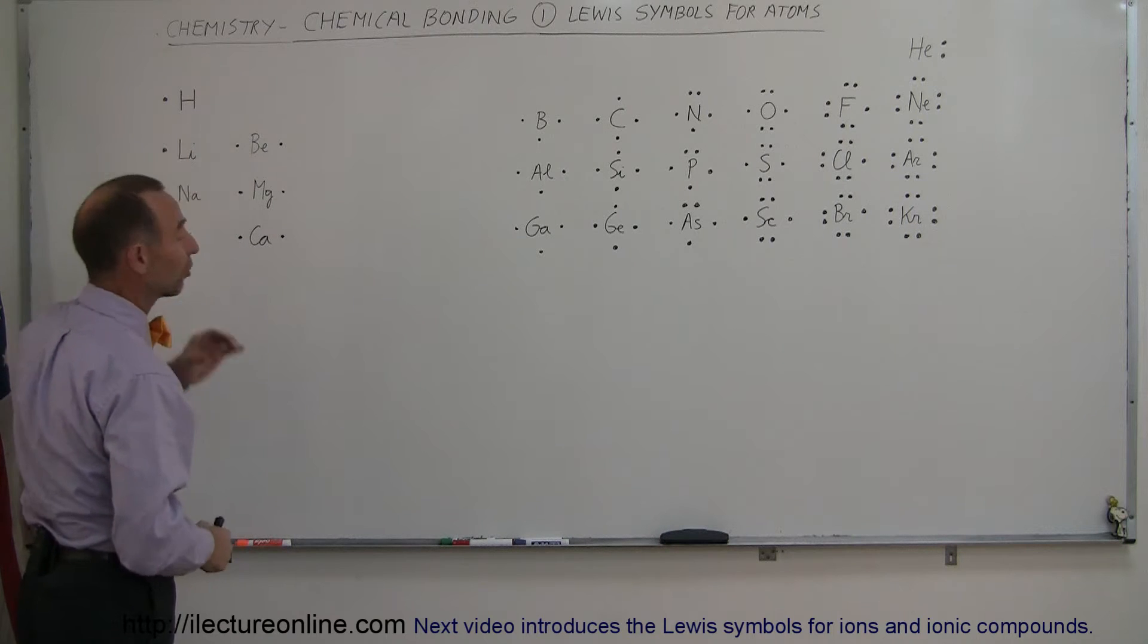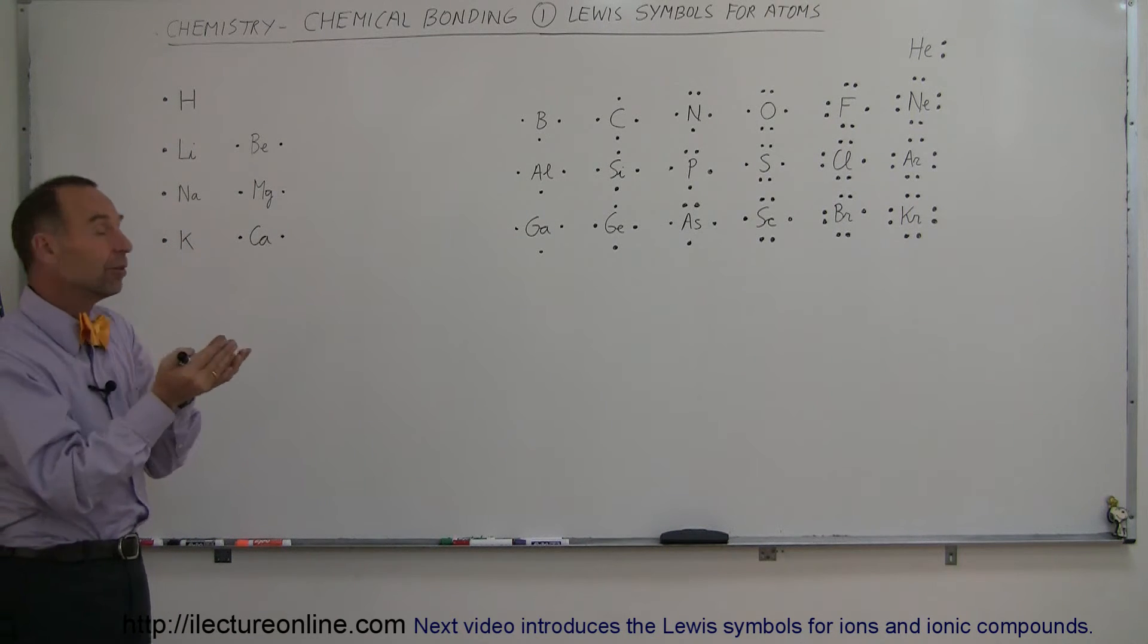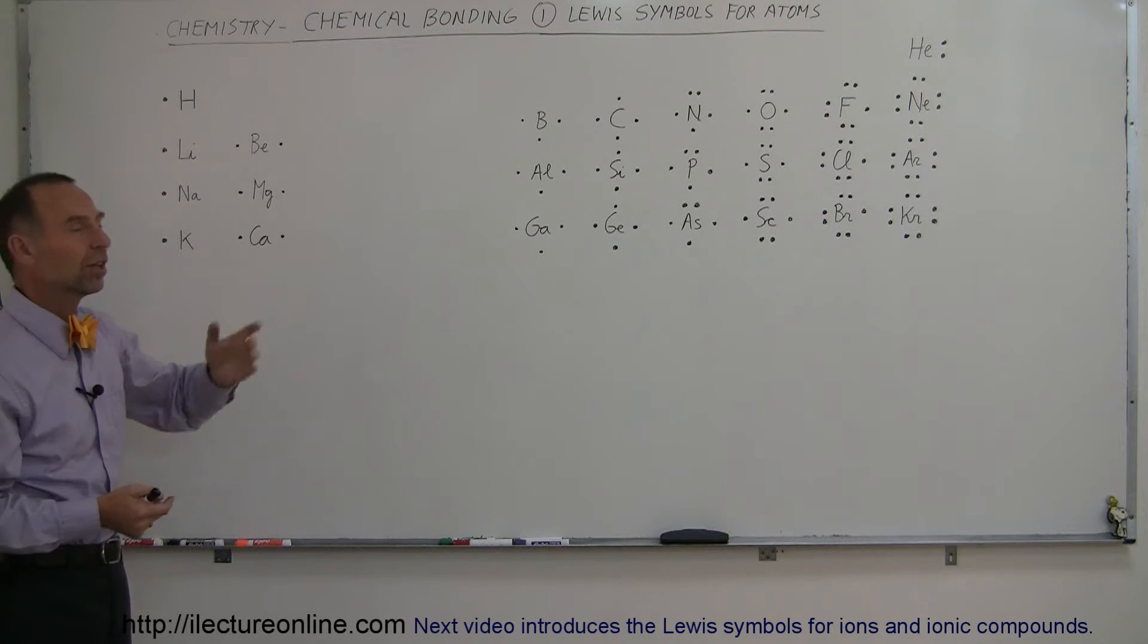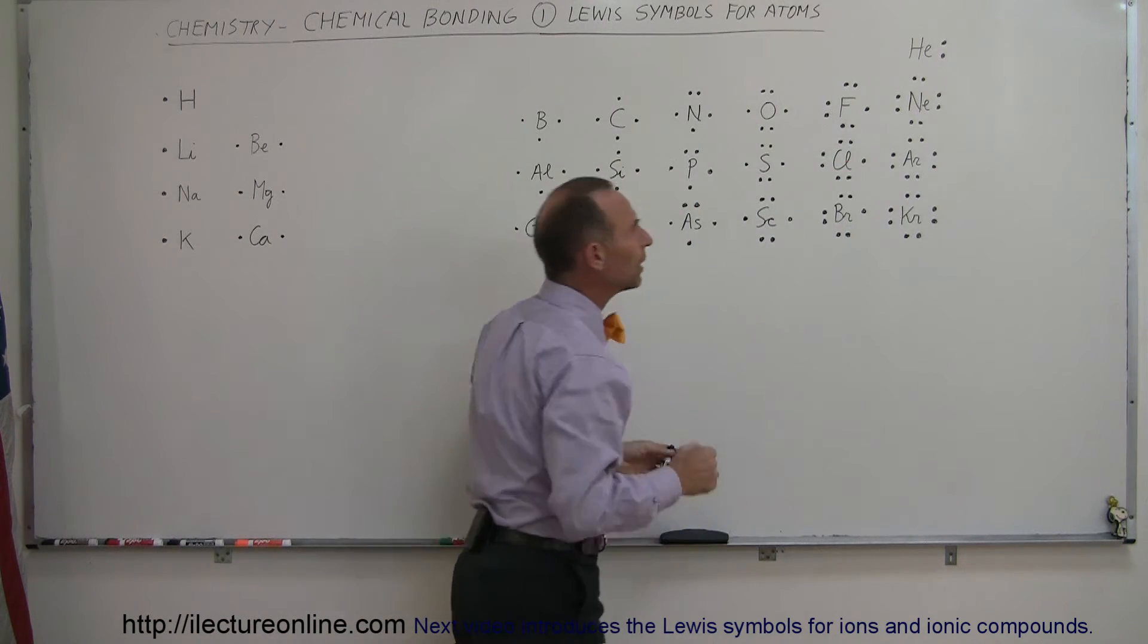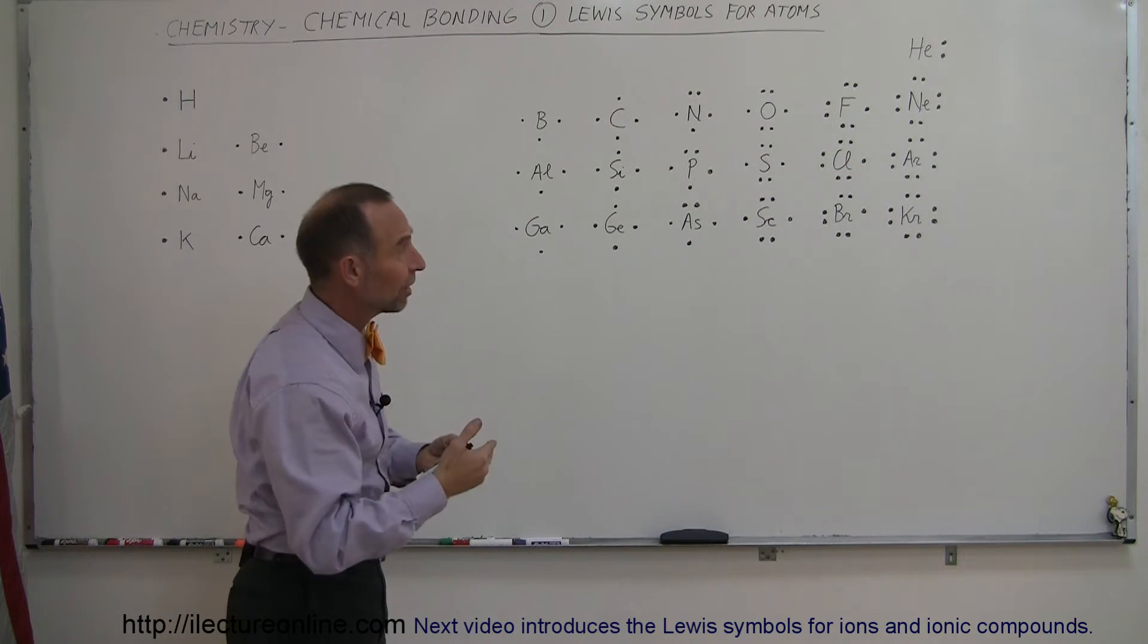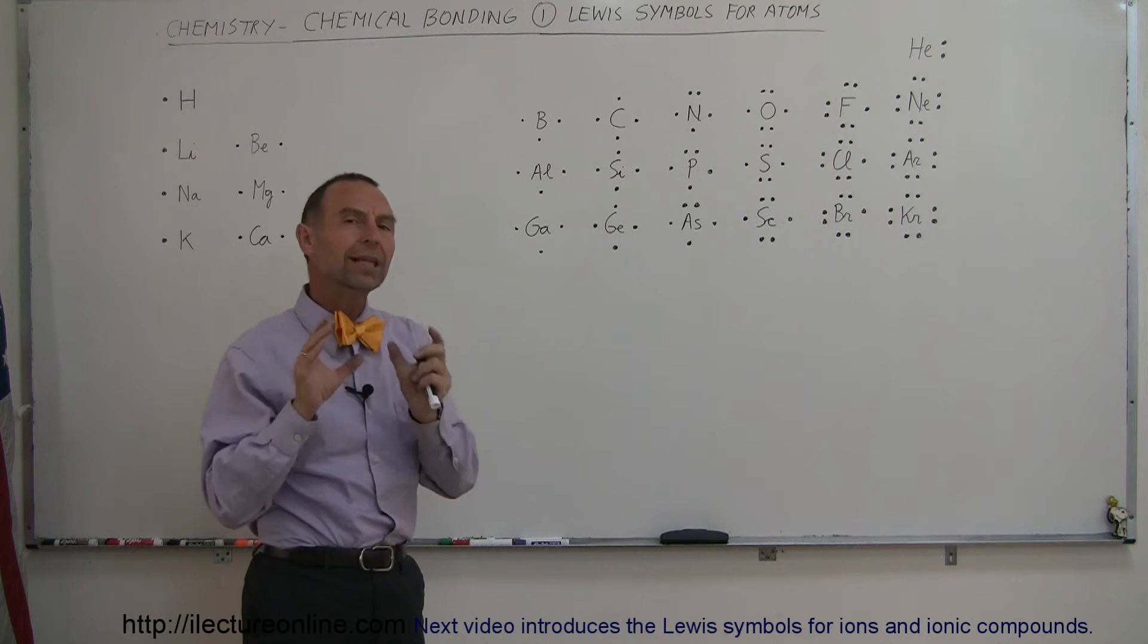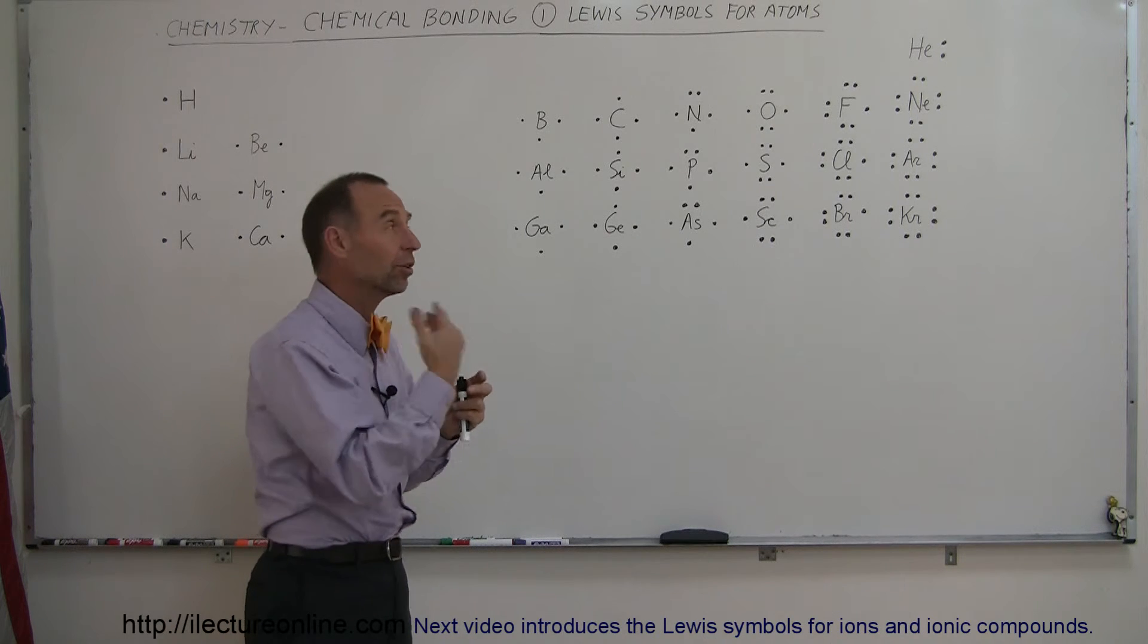For example if we take hydrogen, of course hydrogen only has one electron and it populates the first energy level, so we indicate somehow that there's an electron there in its first energy level. But then if we go for example to chlorine, chlorine has atoms in its first energy level, in its second energy level and in its third energy level. But only the electrons in the third energy level are involved in the bonding process with another atom.